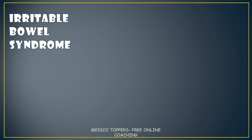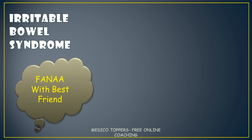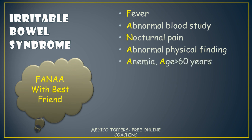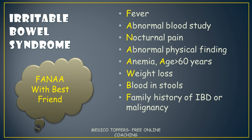Then comes irritable bowel syndrome. Let's see the red flag signs of IBS — the mnemonic is 'FANA with best friend.' F is for fever, A for abnormal blood study, N for nocturnal pain, A for abnormal physical finding, A for anemia and age more than 60 years, W for weight loss, B for blood in stools, and F for family history of IBD or malignancy.